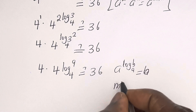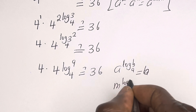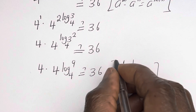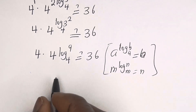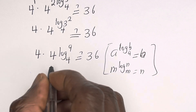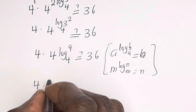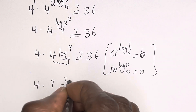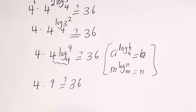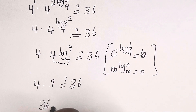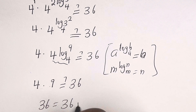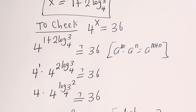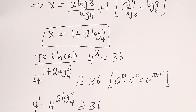If you have m raised to power log n base m, this is equal to n. So this can be written as 4 multiplied by 9 must be equal to 36. 4 multiplied by 9 is 36, which equals 36 — this is true. I hope you enjoyed the video. Thank you for watching. Please don't forget to like, share, comment, and subscribe to my channel.